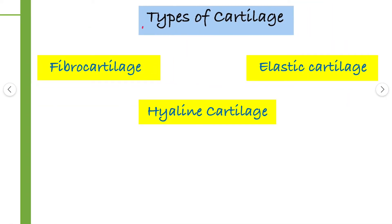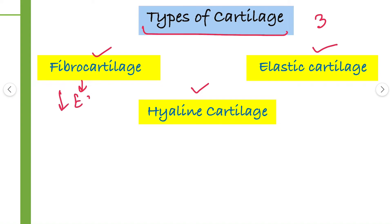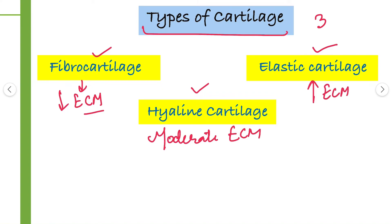There are three types of cartilage: fibrocartilage, hyaline cartilage, and elastic cartilage. They are divided on the basis of the quantity of different components. Fibrocartilage has the least extracellular matrix. Hyaline cartilage has a moderate amount of extracellular matrix. Elastic cartilage has the greatest amount of extracellular matrix.